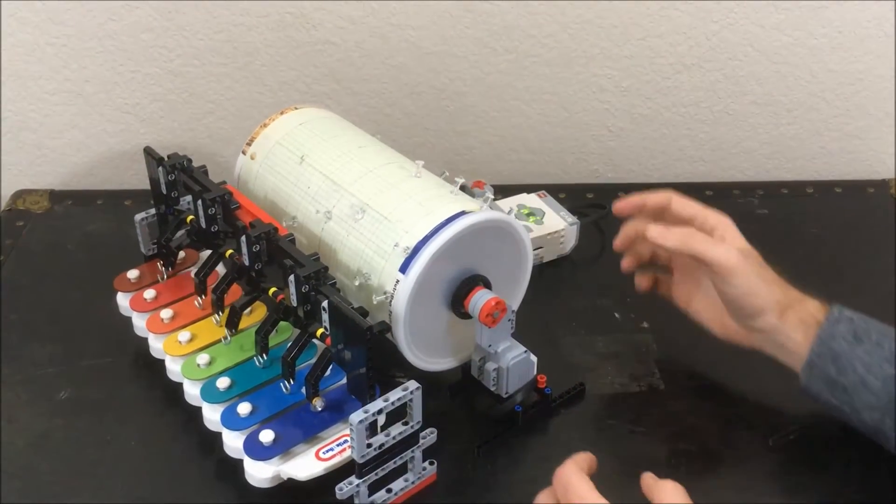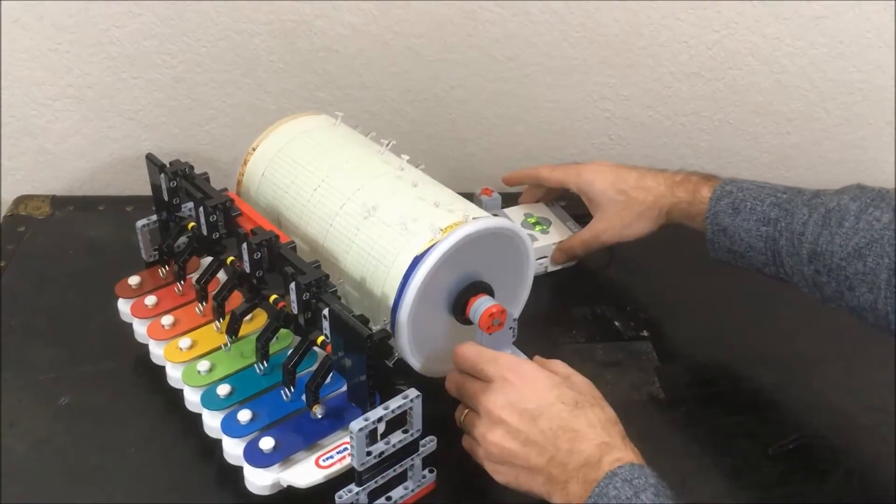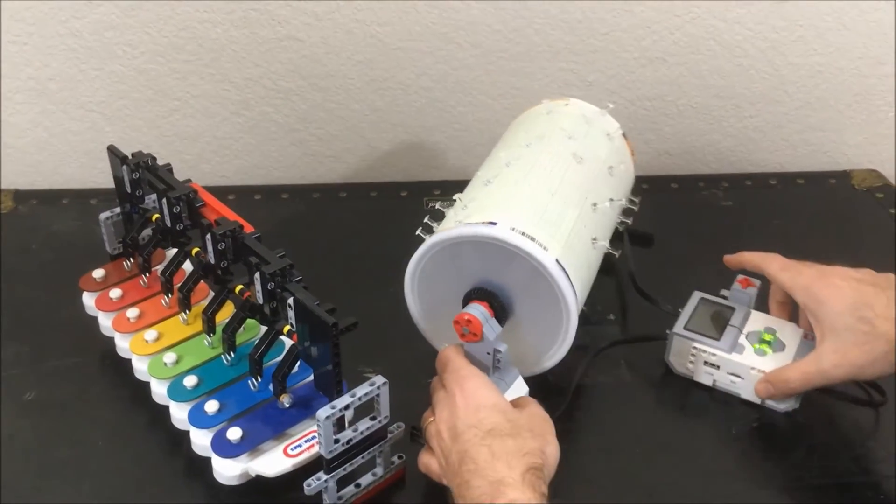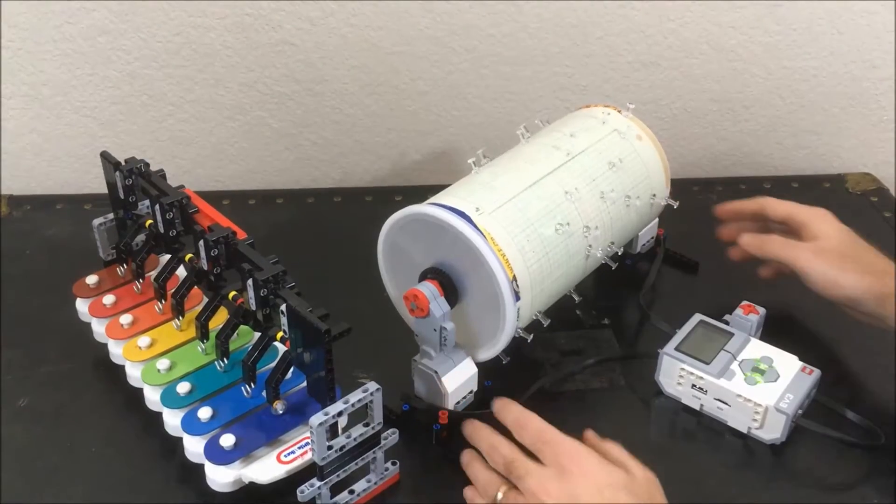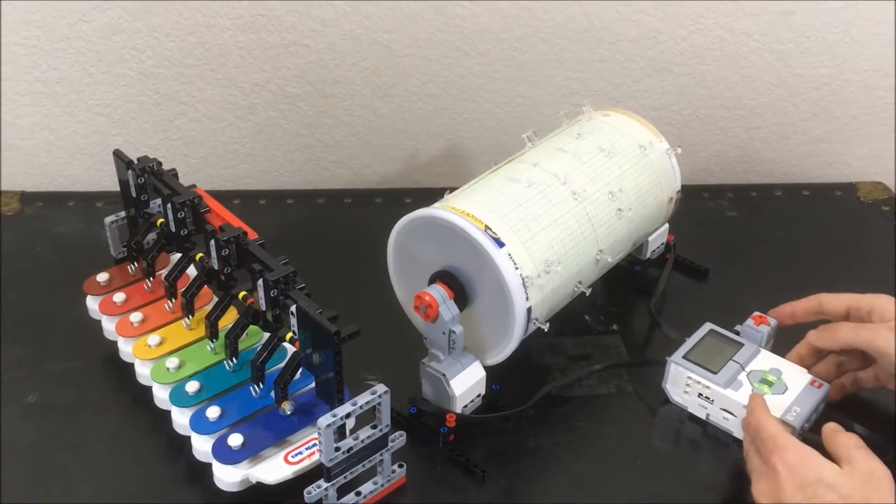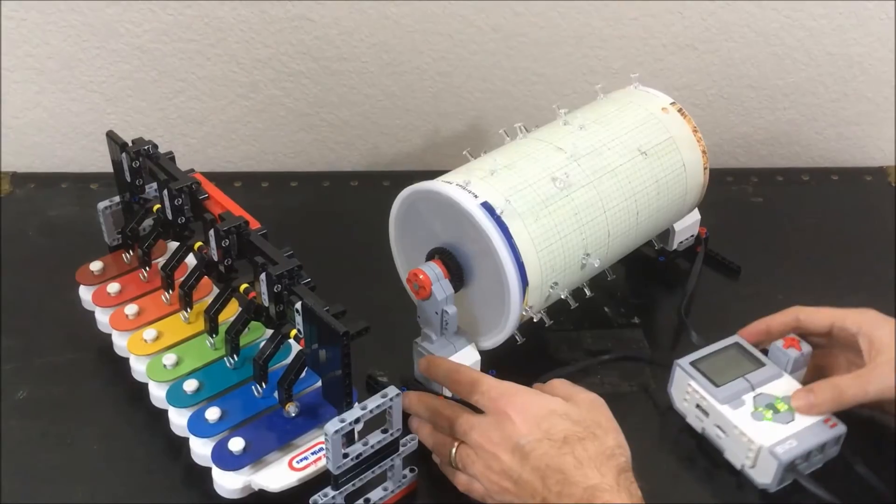So what we have here is the Music Box playing a Christmas song and if I separate it out you can see that it's really two major pieces. The first piece is the LEGO Mindstorm brick with the touch sensor controlling two large motors.